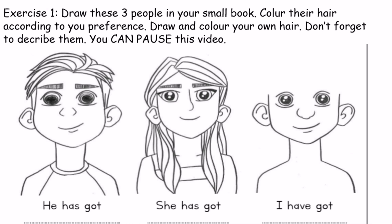Next, we're going to describe people. Take out your small book. For this exercise, I want you to draw these three people in your small book and color their hair according to your preference — meaning you can choose any color you like. For example, you can color it pink or green — it's up to you.